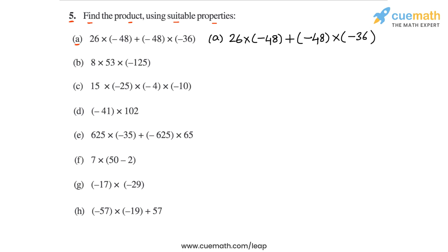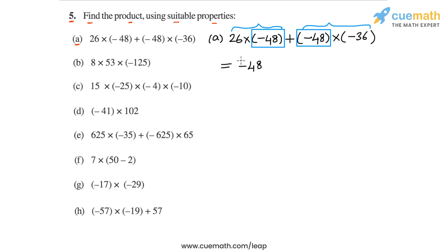If you observe this expression, it has two terms which are being summed: 26 into minus 48, and minus 48 into minus 36. In these two terms, we see that minus 48 is common. So we can take it out and write this expression as minus 48 into 26 plus minus 36.